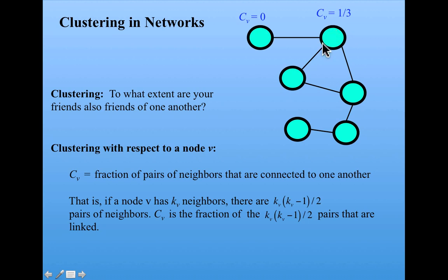This node has three neighbors. This one, this one, and this one. So that means that it has three times two over two pairs of neighbors, possible pairs. That equals three. Six over two.